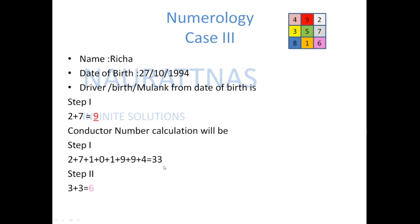When we add this, it comes to 33. Then we add 3 plus 3 again to make it a single digit. The single digit coming is 6. So the conductor number of Richa is 6.